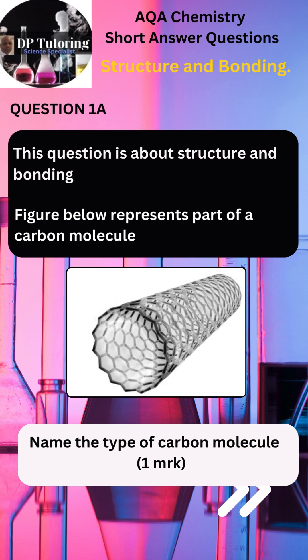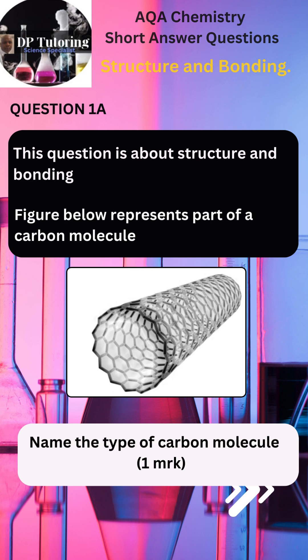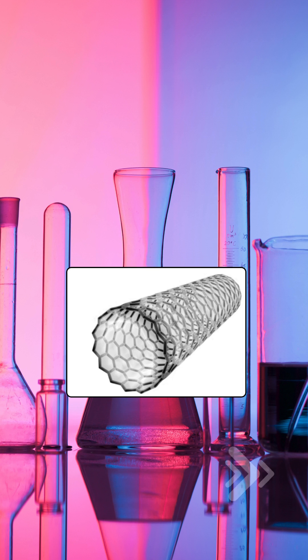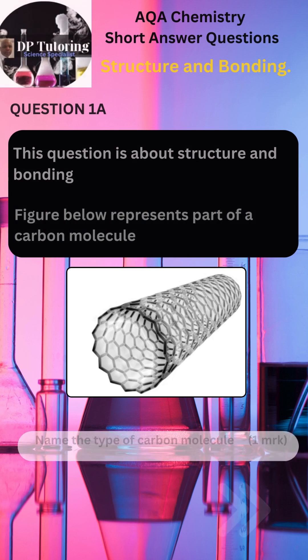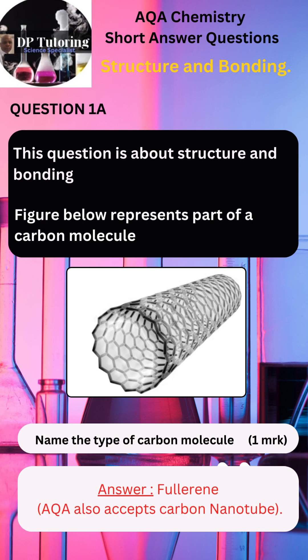Part A of the question asks you to name the type of carbon molecule shown in the figure on screen. These are giant structures based on the number of carbon atoms — maybe it's a good time to review this topic. The correct answer for Part A is fullerene. AQA also accepts carbon nanotube.